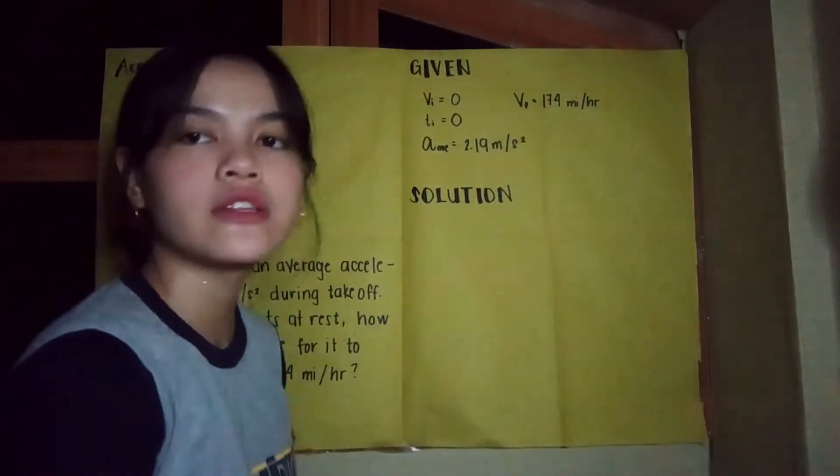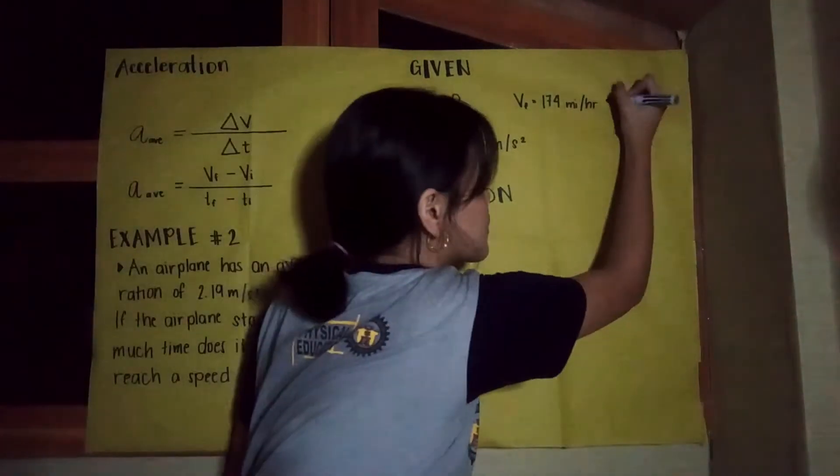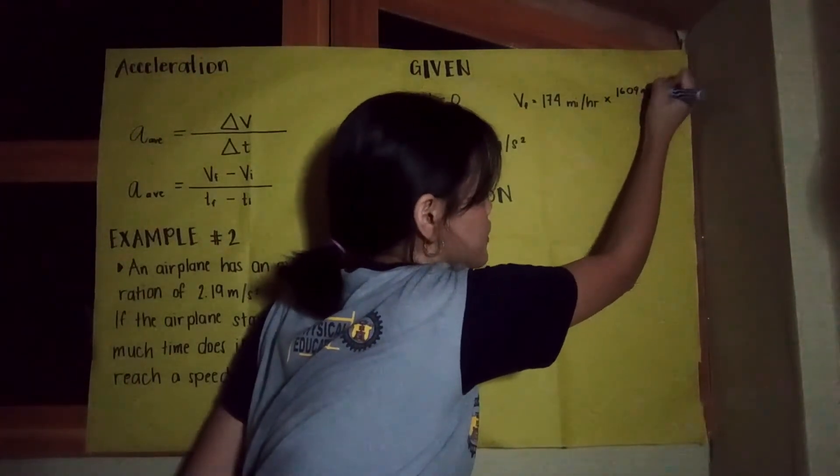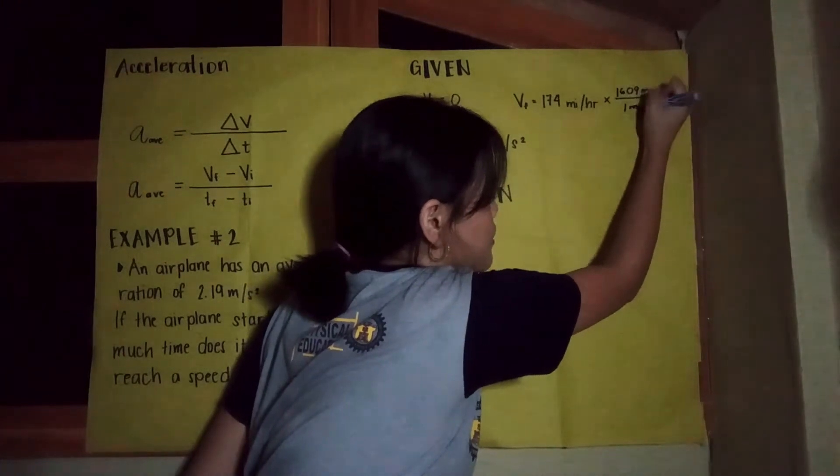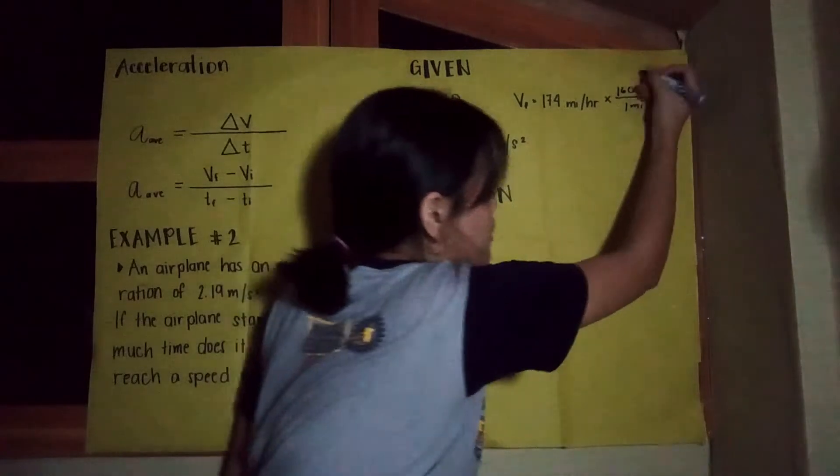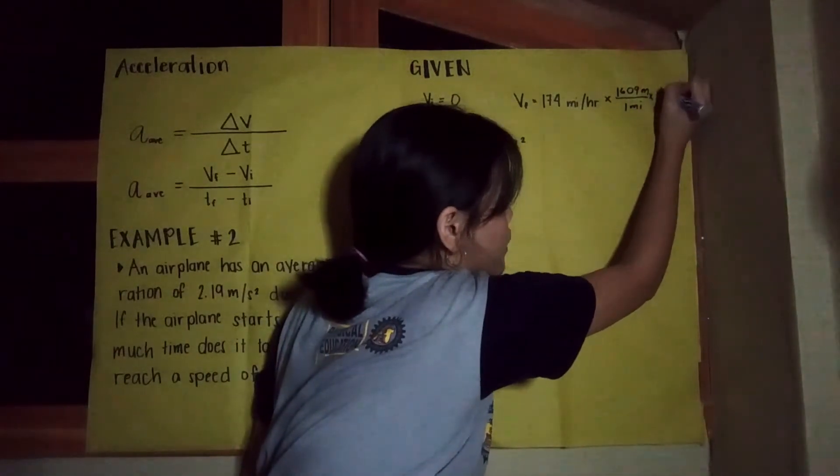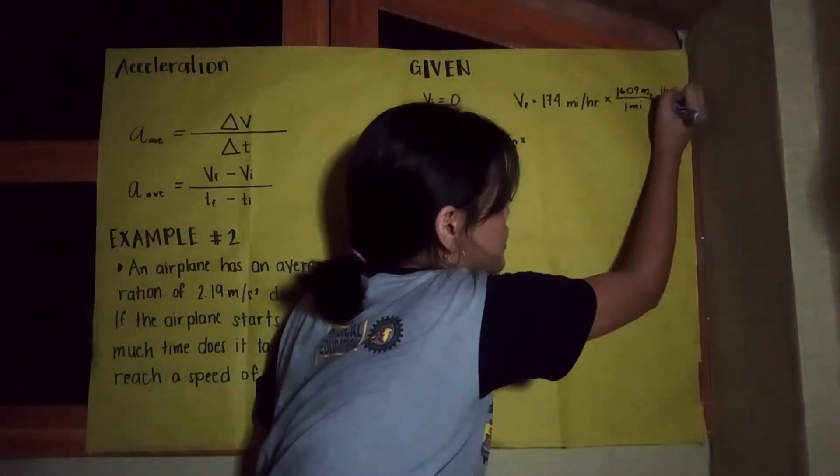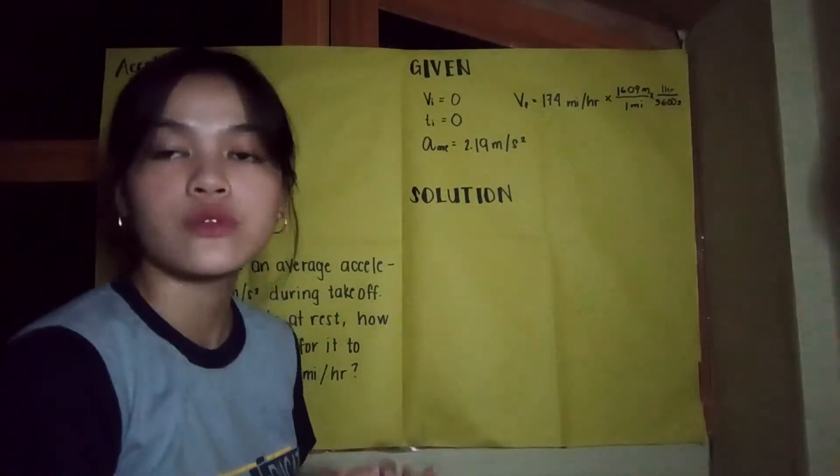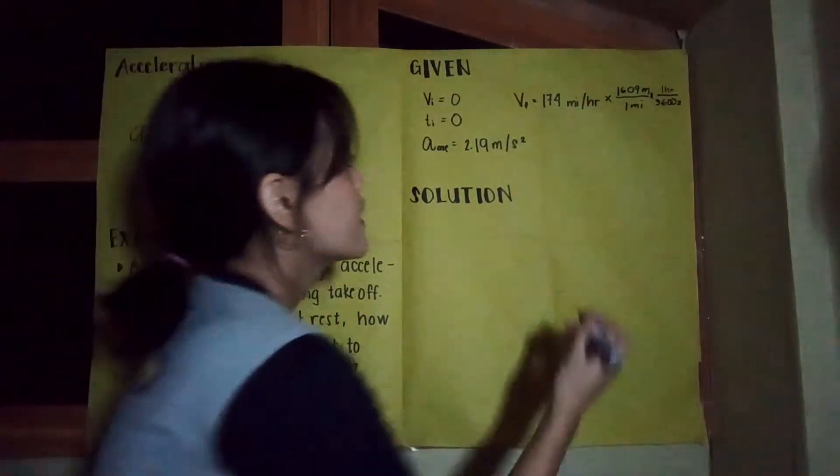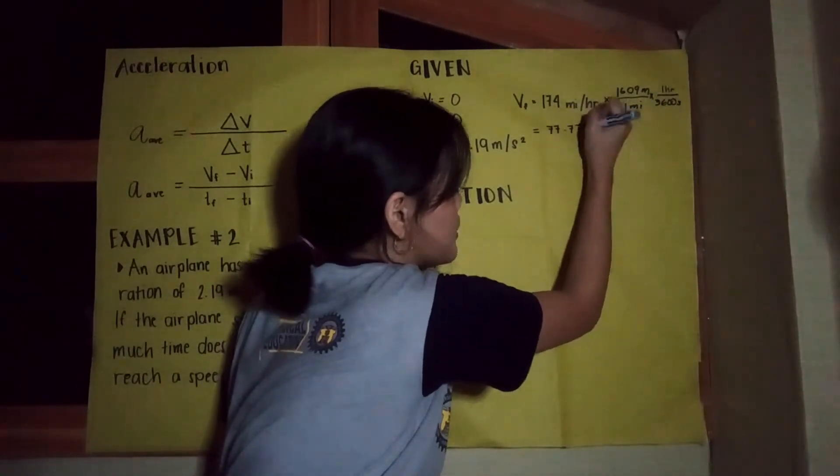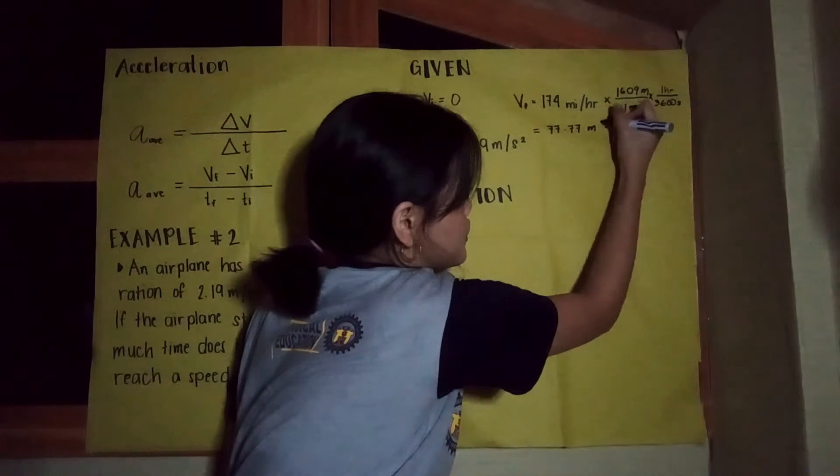So in converting our final velocity, we need to multiply it by 1,609 meters over 1 mile, because 1 mile is equivalent to 1,609 meters. And to cancel the hour, we need to multiply it by 1 hour over 3,600 seconds, because 1 hour is equivalent to 3,600 seconds. And what we're going to get is 77.77 meters per second.